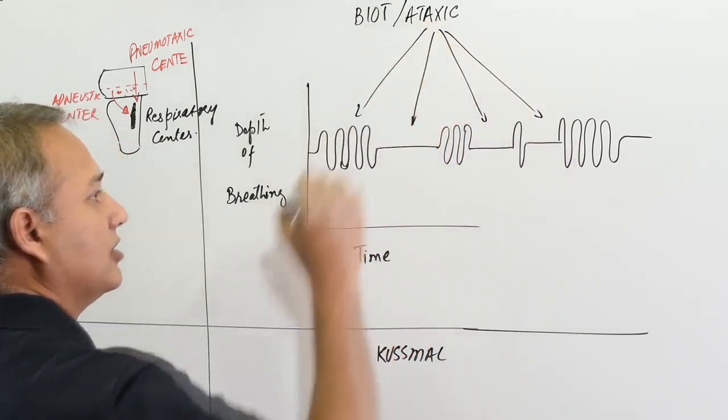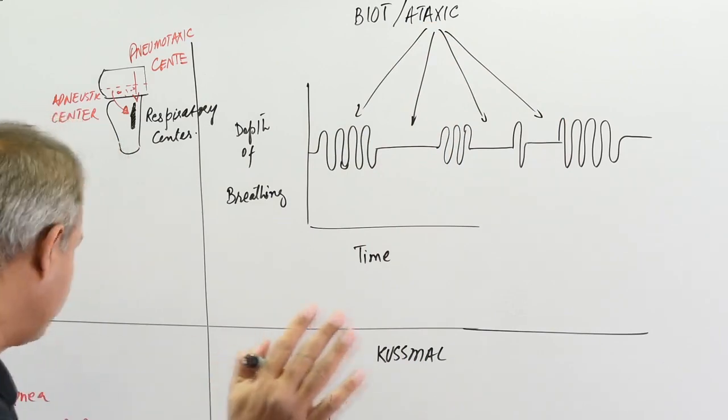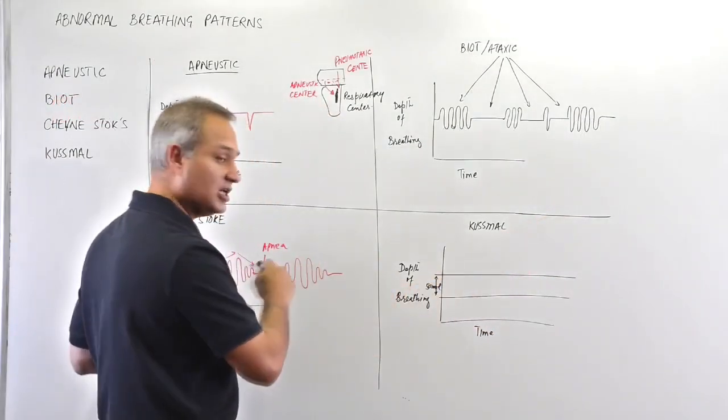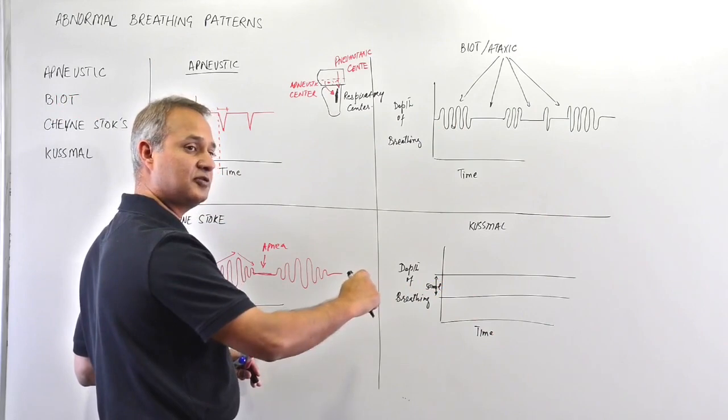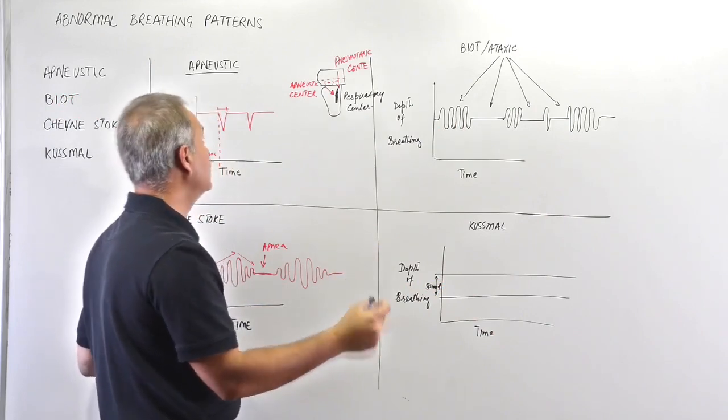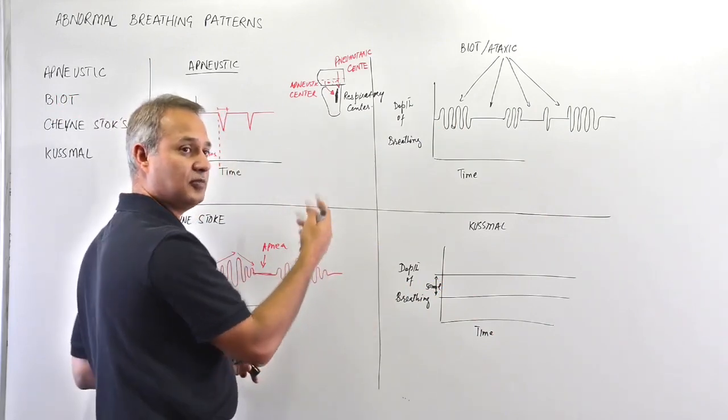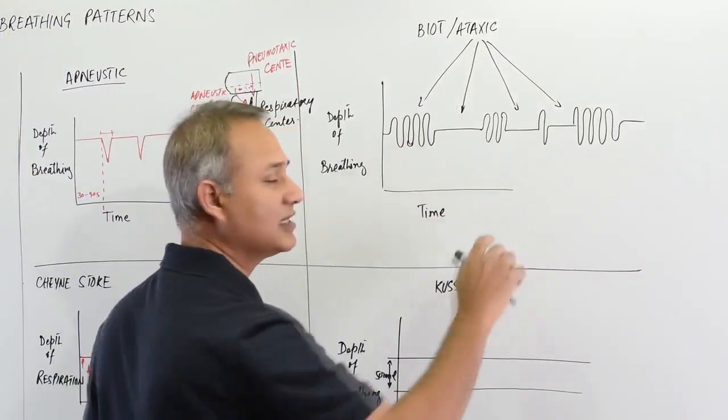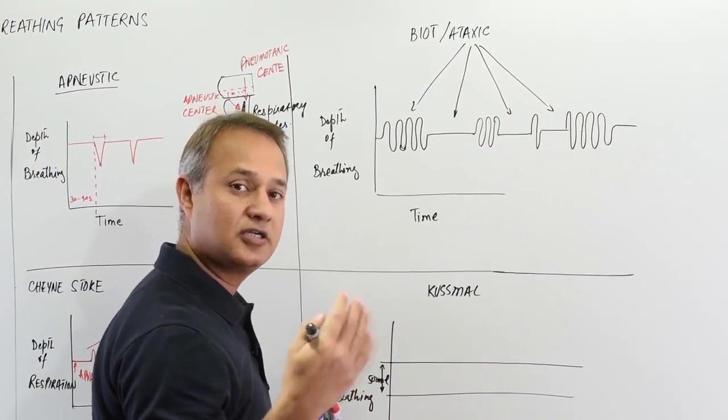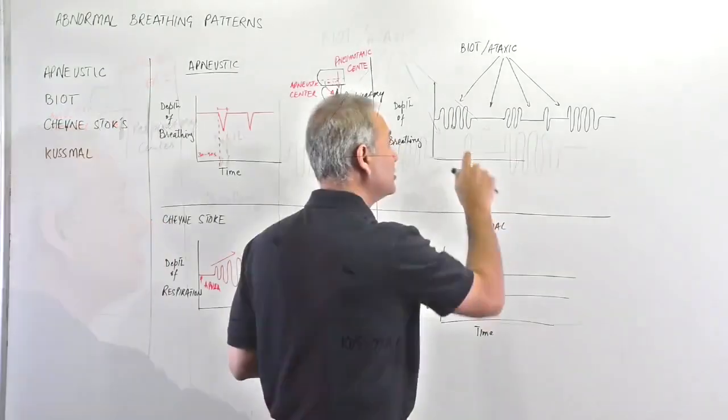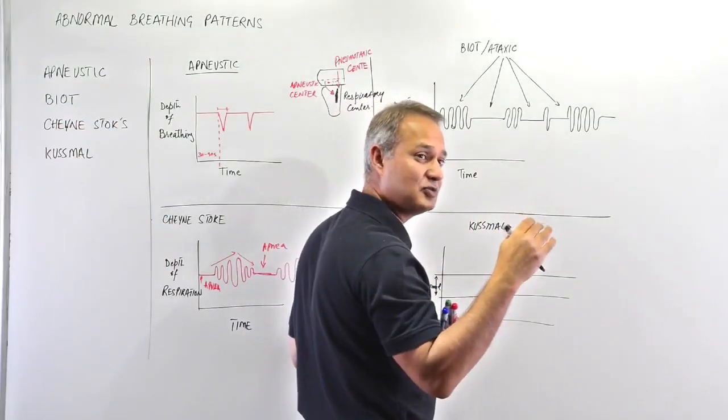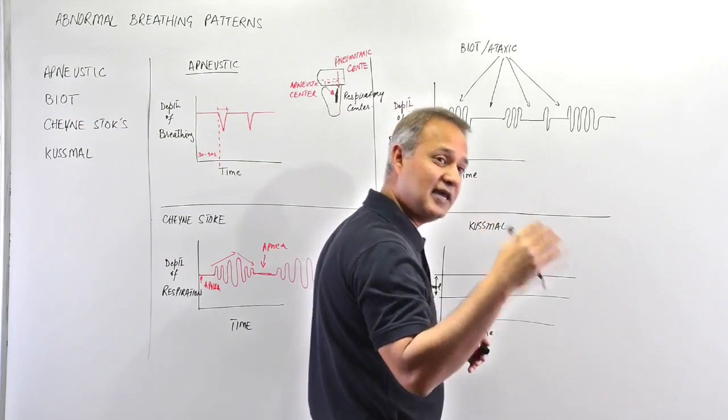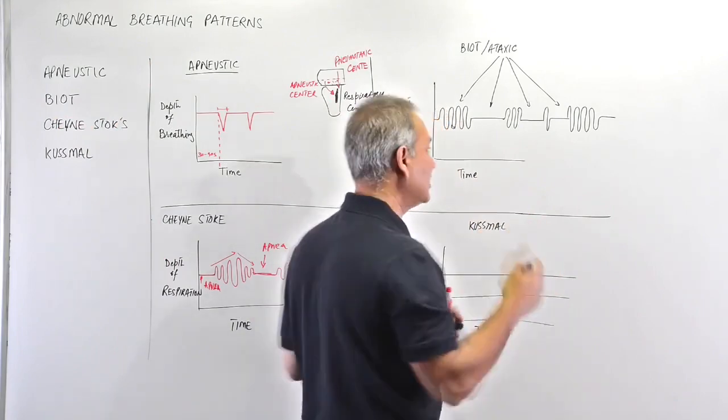If you saw that in Cheyne-Stoke, Cheyne-Stoke has a very particular rhythm that you can actually observe. Similarly, apneustic abnormality has a rhythm you can observe. Here you are seeing that the rhythm is not constant. However, depth of inspiration and expiration - that is constant. So tidal volume is normal.